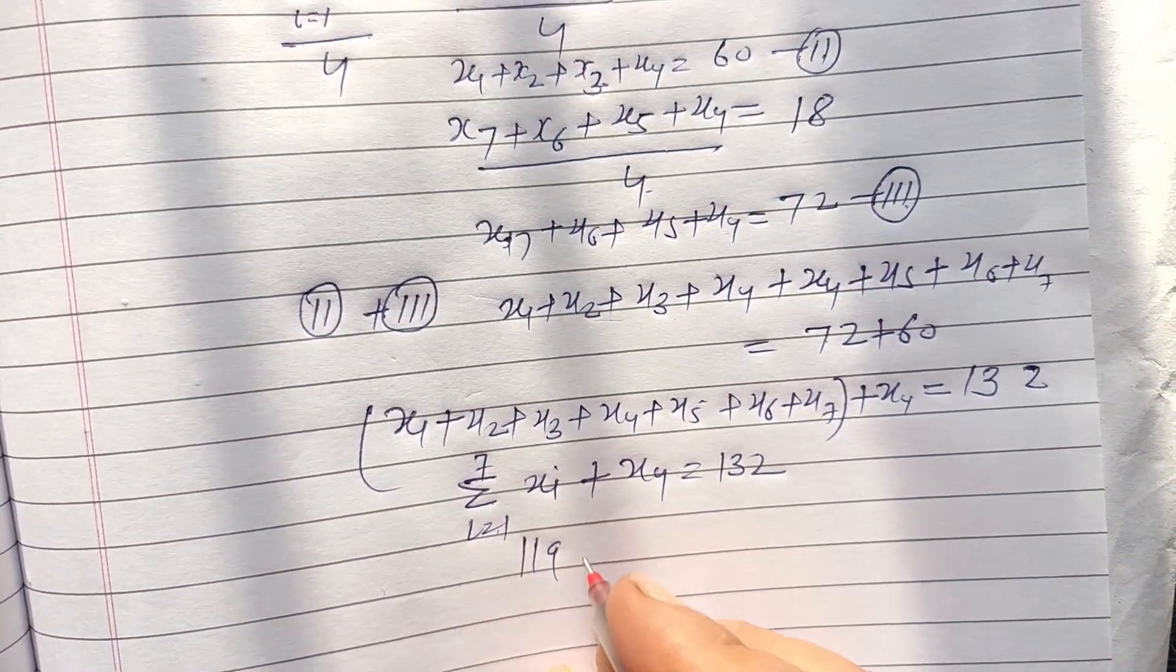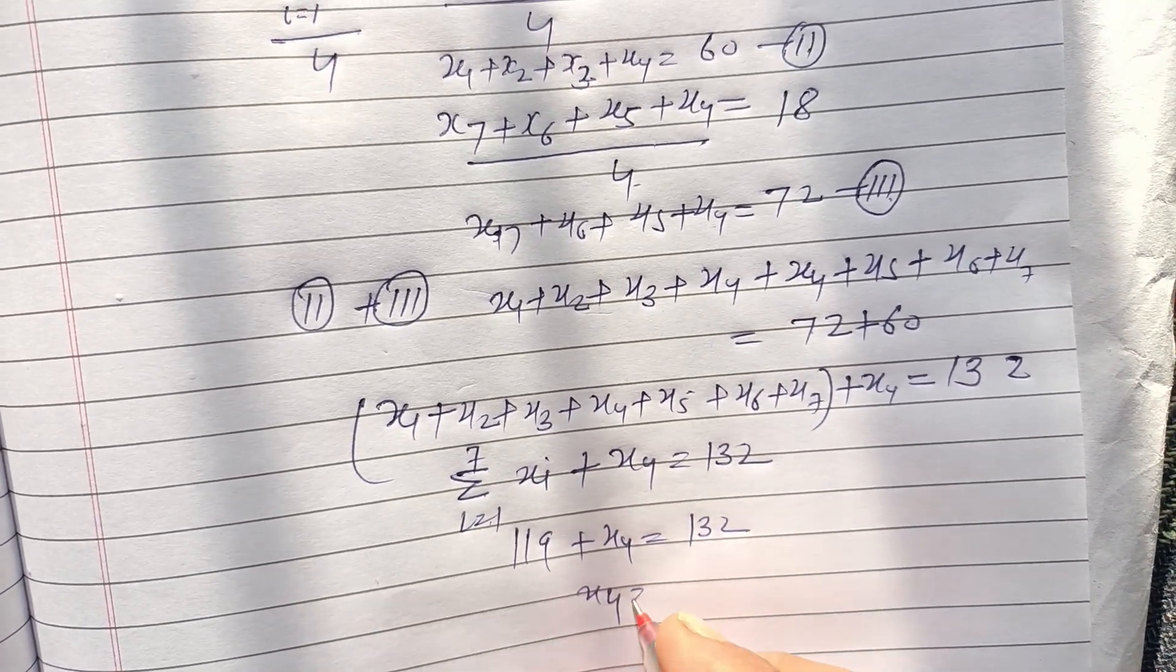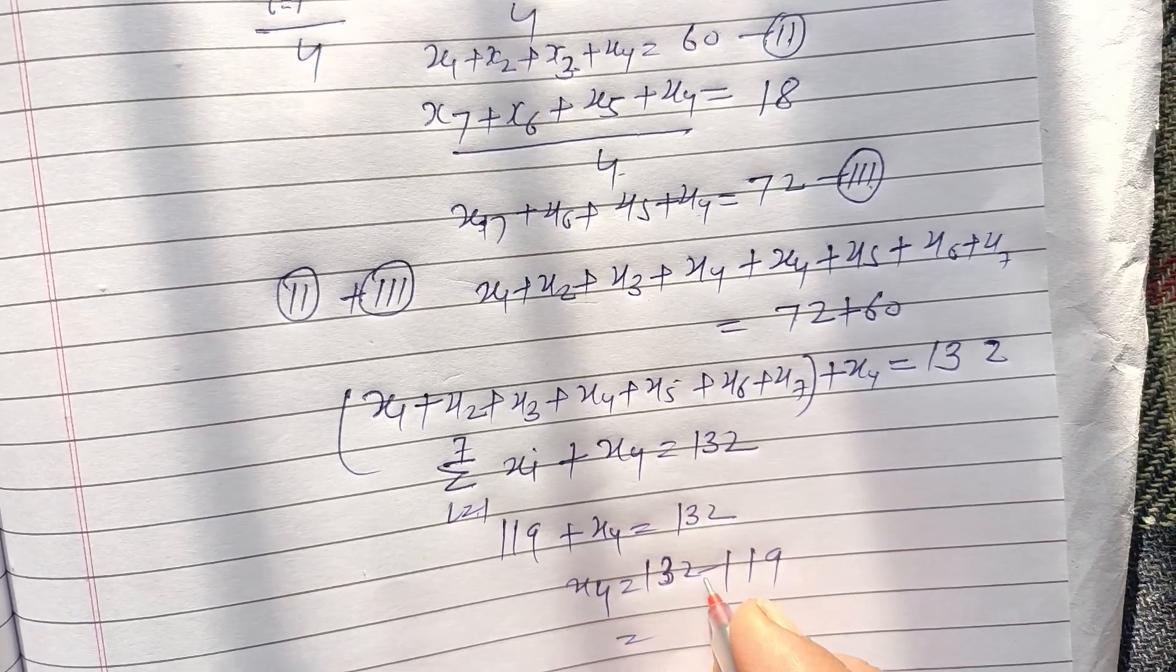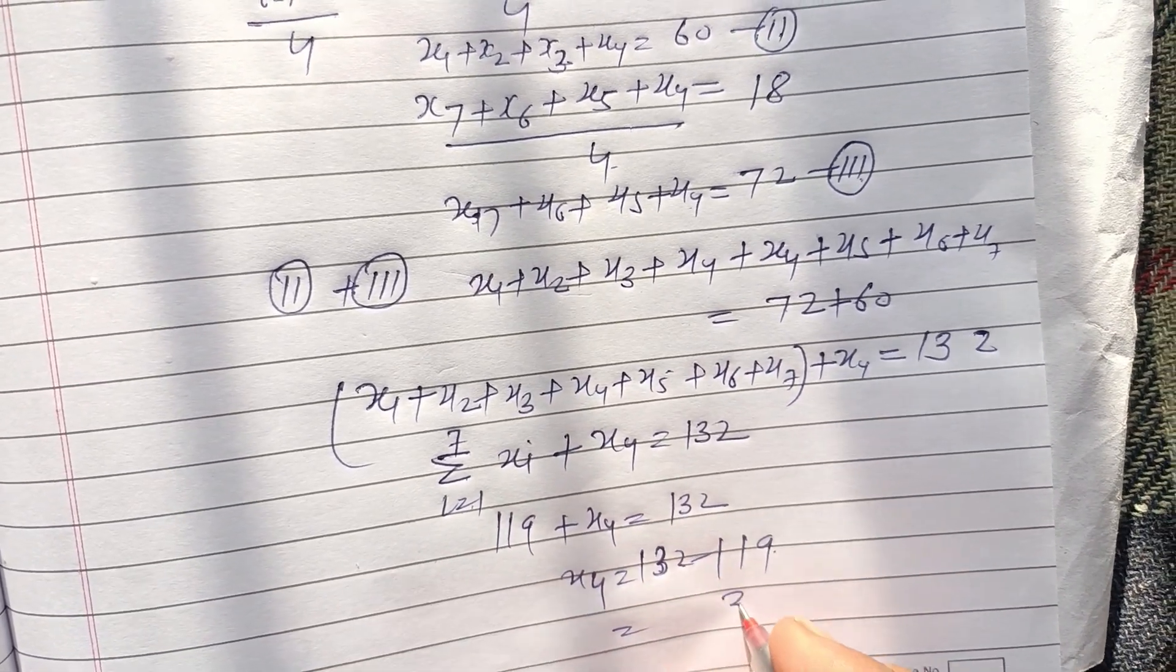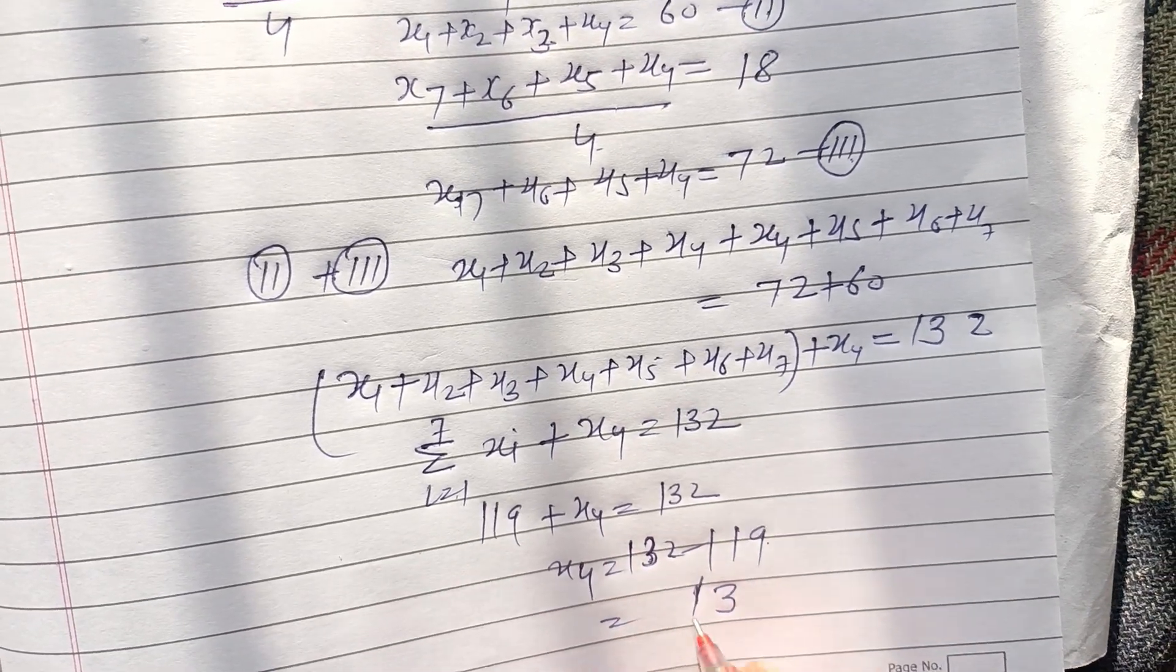This is our sigma i equals 1 to 7, which is 119. So 119 plus x4 equals 132. Therefore, x4 equals 132 minus 119, which is 13.